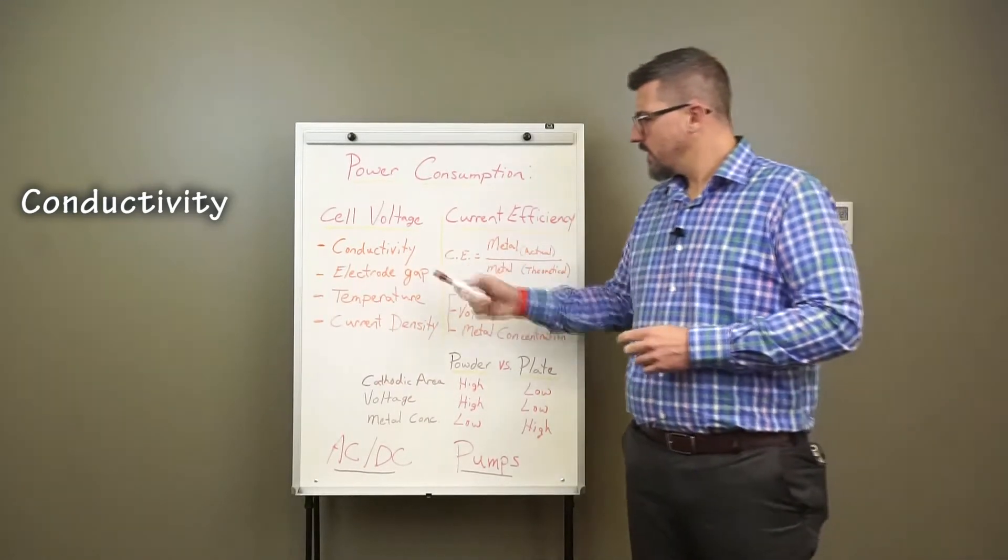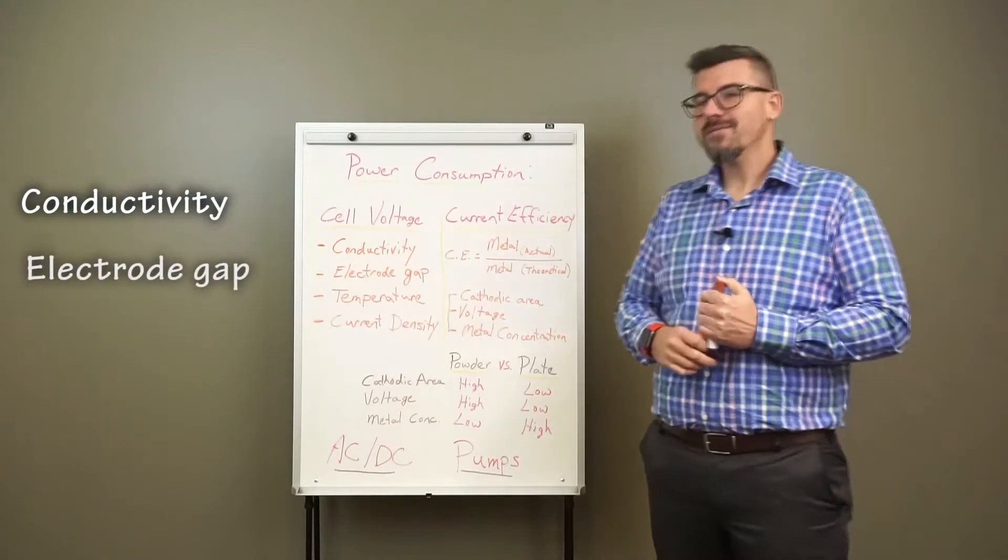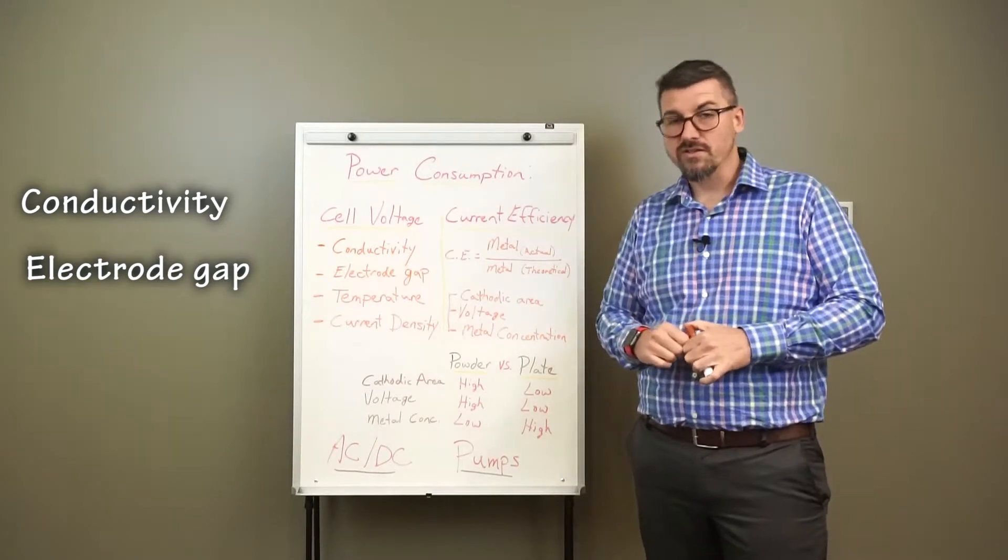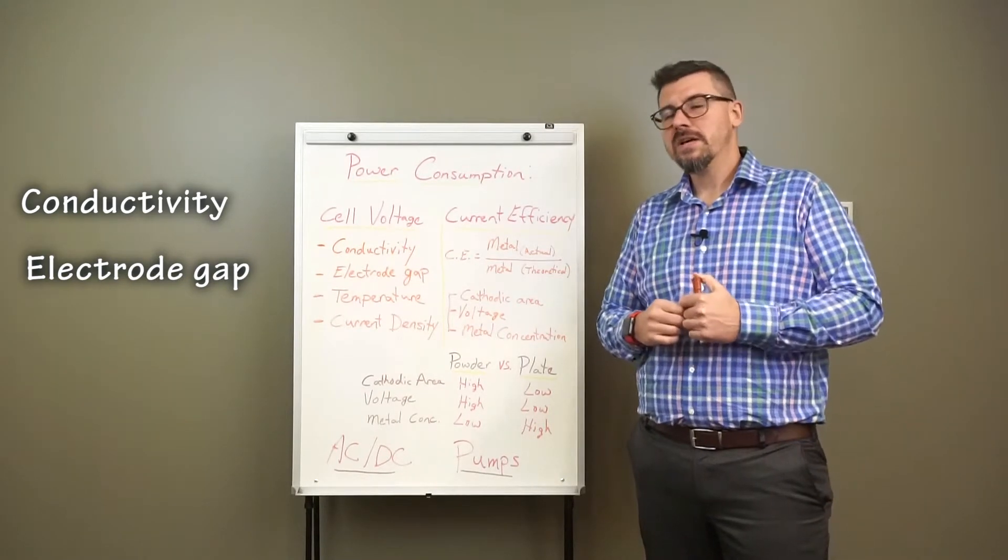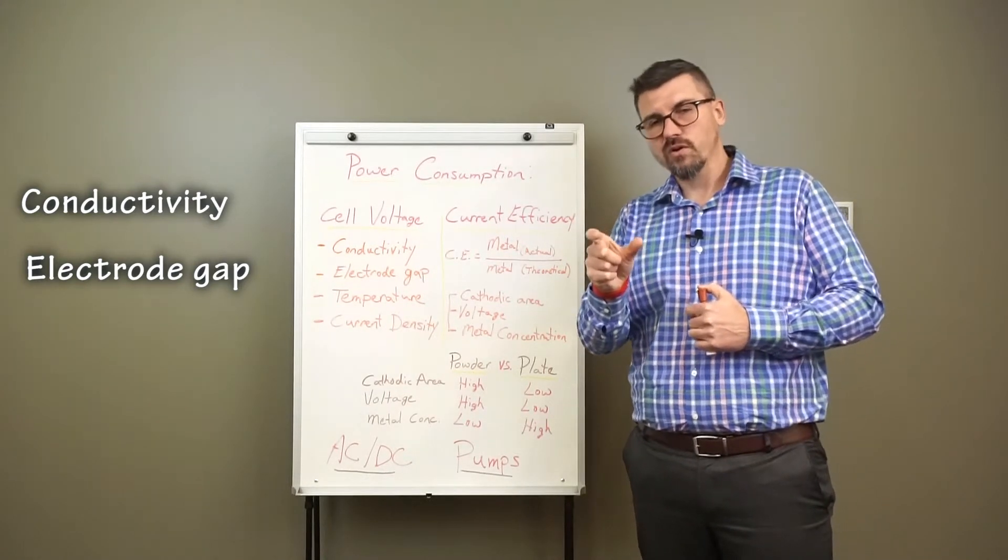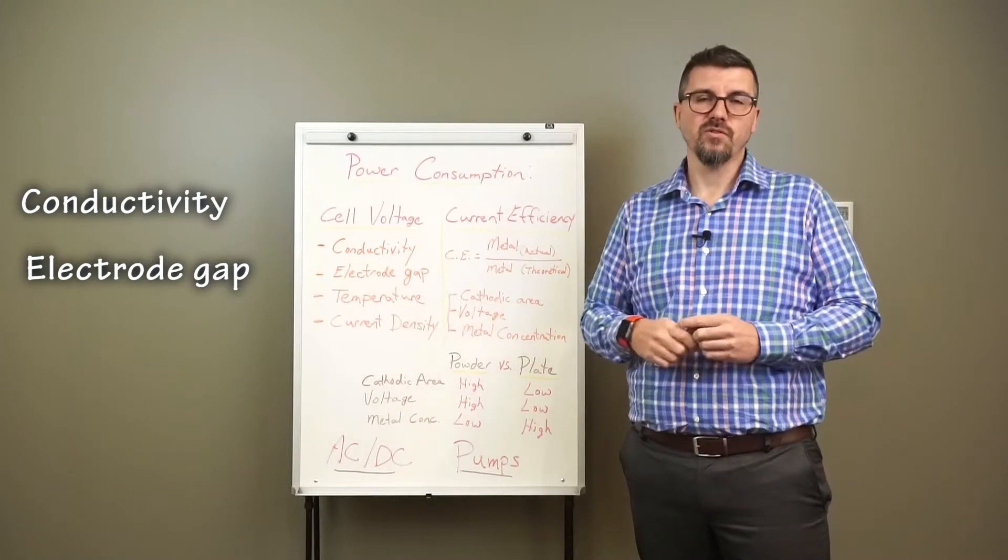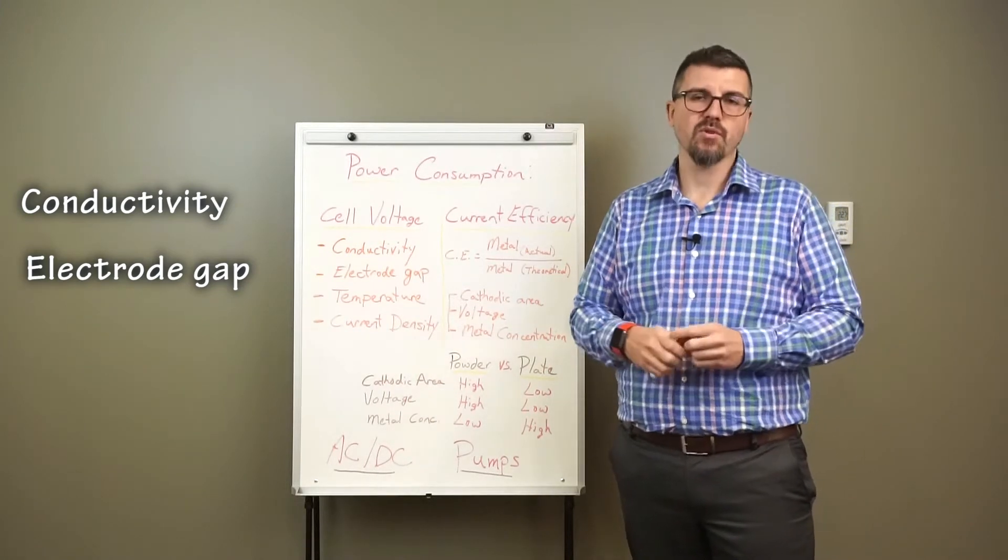The second is the electrode gap. The electrode gap is the distance between the anode and the cathode in the electrowinning cell. A higher electrode gap results in a higher cell voltage and a higher power consumption. And in fact, in some countries where the electricity costs are very high, we can actually suggest a cell with a shorter anode cathode gap. And what that does is helps to reduce the voltage and improves the power consumption.